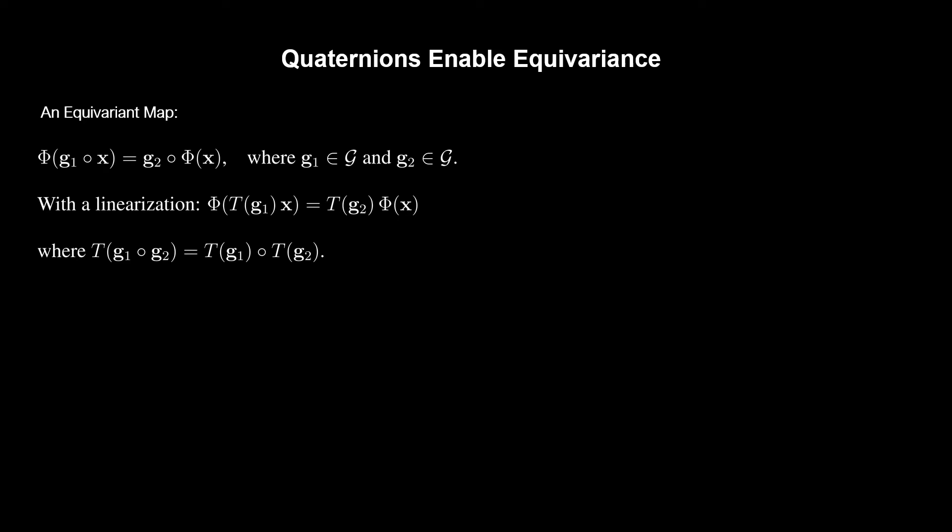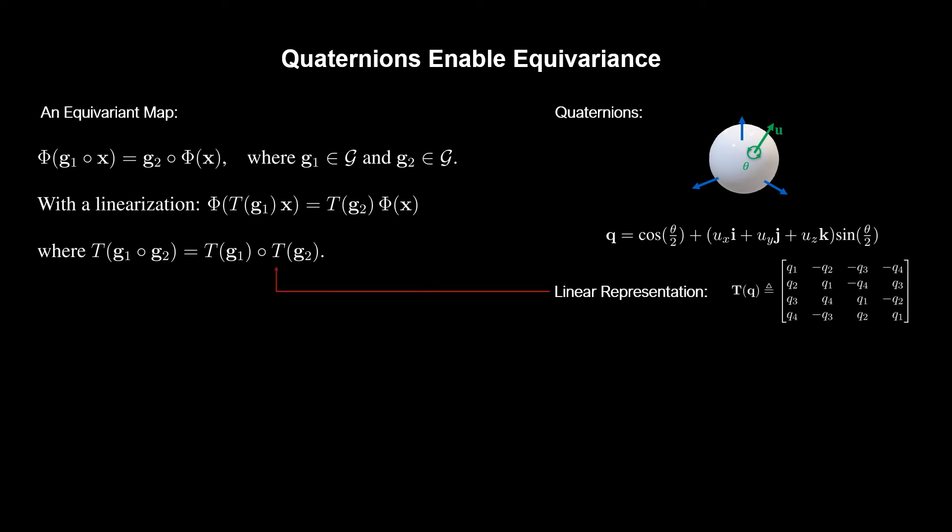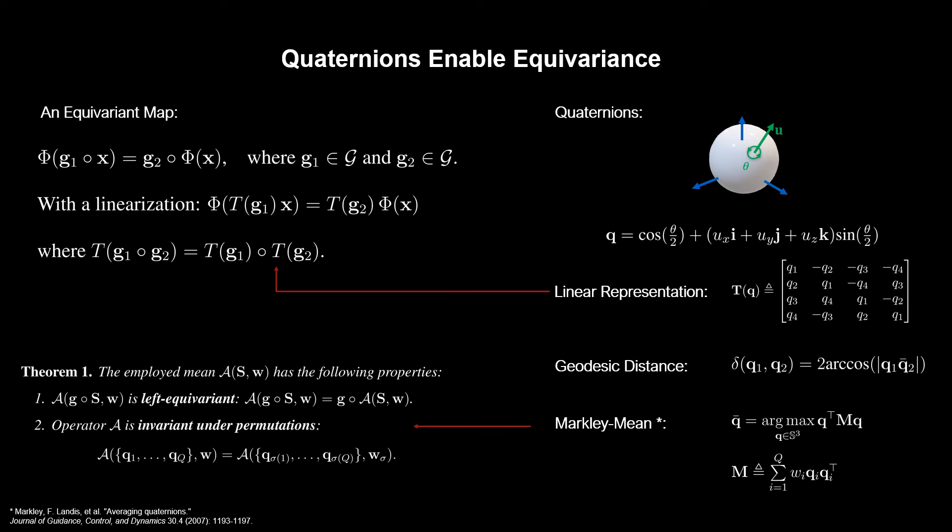We parameterize the rotations and hence the local reference frames via quaternions and show that the following quaternion operators will enable an equivariant design: the linear representation, an easy-to-compute geodesic distance, and closed-form mean. Note though, while it may not be possible to find closed-form expressions for the means on manifolds generally, we prove that a particular choice, Markley et al., admits a closed-form and is SO(3) equivariant as well as permutation invariant.